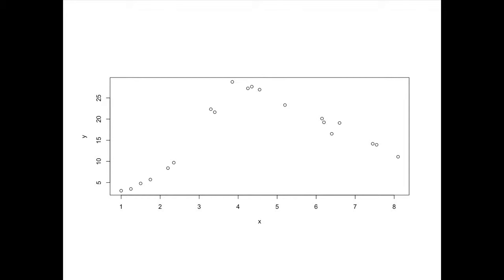This is some random data points I've created. We have an x variable — think of that as the predictor, as we usually would in a regression format — and a y variable, which we can think of as the outcome. What I want you to think about as you look at this picture is how we might predict the mean of y given x. It's the same question we've been asking ourselves as we talk about t-tests, f-tests, regression, and equivalently ANOVA: how can we best predict the mean of y given x?